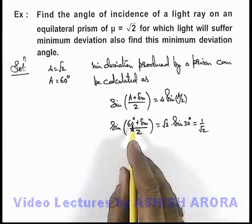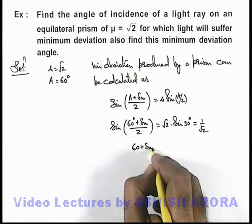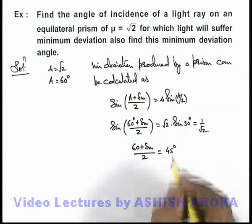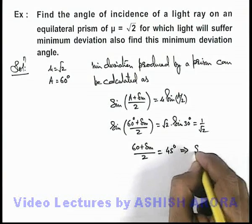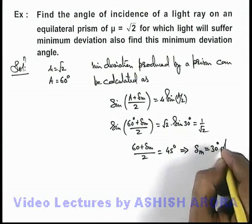If sine of 60 plus delta m by 2 is 1 by root 2, that means the value of 60 plus delta m by 2 is sine inverse 1 by root 2, that is 45 degrees. If we simplify the expression we get the value of minimum deviation to be 30 degrees.